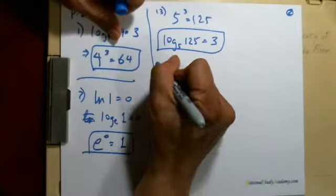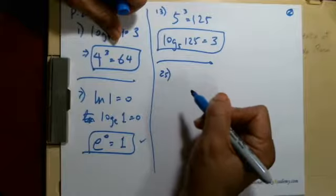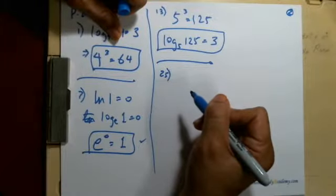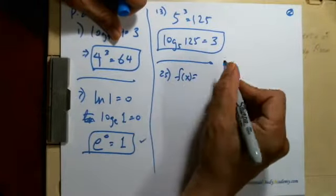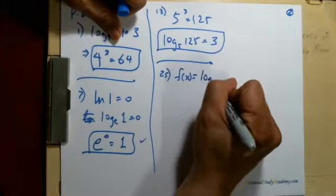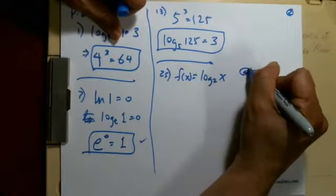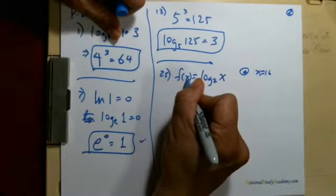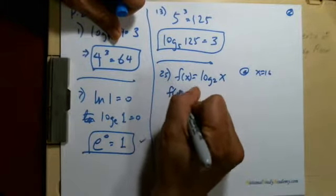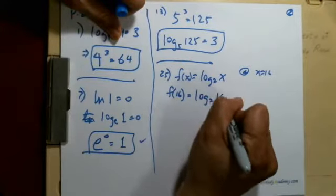We're going to skip 19 to 24 because you should be able to do that on your calculator. Let's try 25 now. 25 is a really cute little problem. Evaluate the function indicated with the value of x without using any calculator. So the function is something like this: f of x is equal to log base 2 of x. And when x equals, I'm going to just do one of them, at x equals 16.